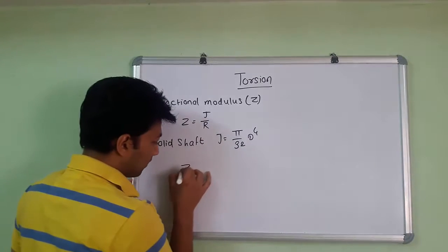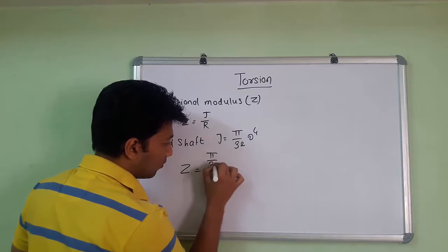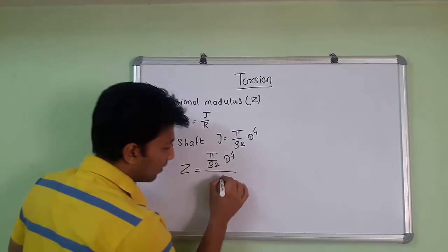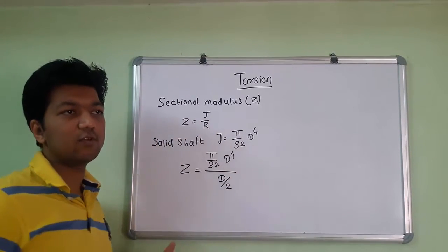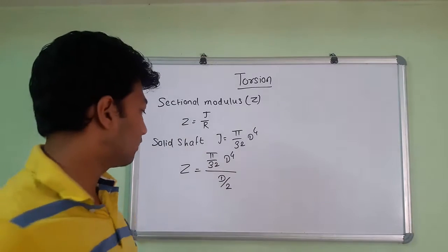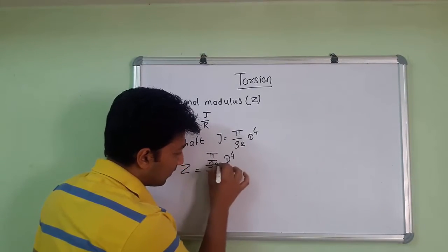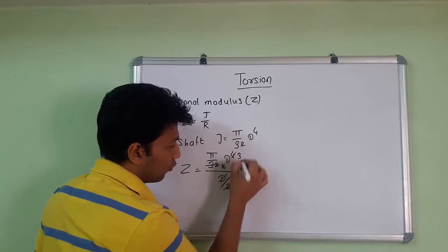We put this value: Z equals pi by 32 d raised to 4 divided by R. R will be capital D by 2. We know that is half of the diameter, so that is why it is 2. This 2 gets cancelled, we get 16, and here d gets cancelled, we get d cube.